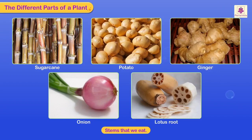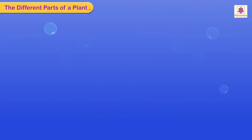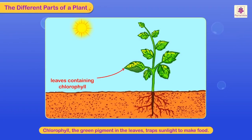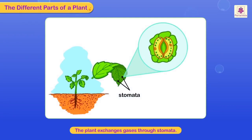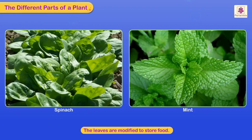Sugarcane, potato, ginger, onion, and lotus root are stems that we eat. The leaves of a plant are its kitchen, as chlorophyll — the green pigment in the leaves — traps sunlight to make food. The plant exchanges gases through the stomata. In some plants, the leaves are modified to store food.